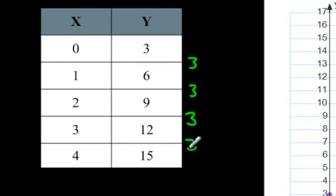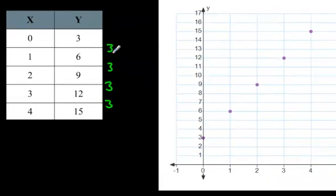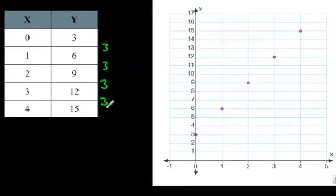If these numbers are all the same, if the first differences are all the same, then what that tells us is that the graph of this particular linear relation is going to be a straight line. It's going to be a straight line because these numbers are all the same. We just did something called a first differences test. They're all 3.